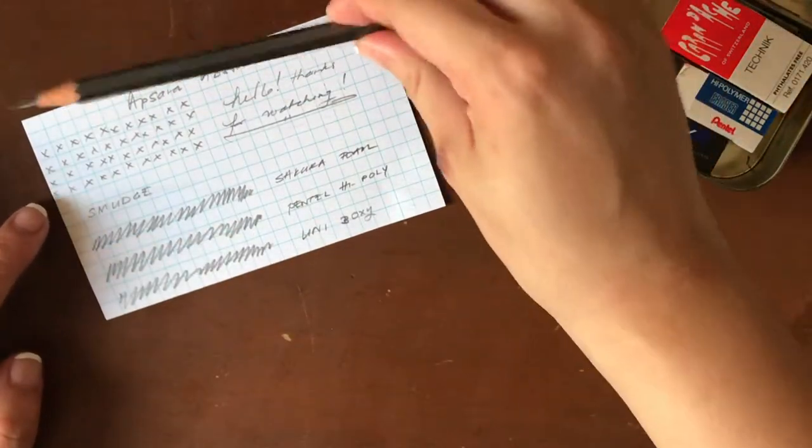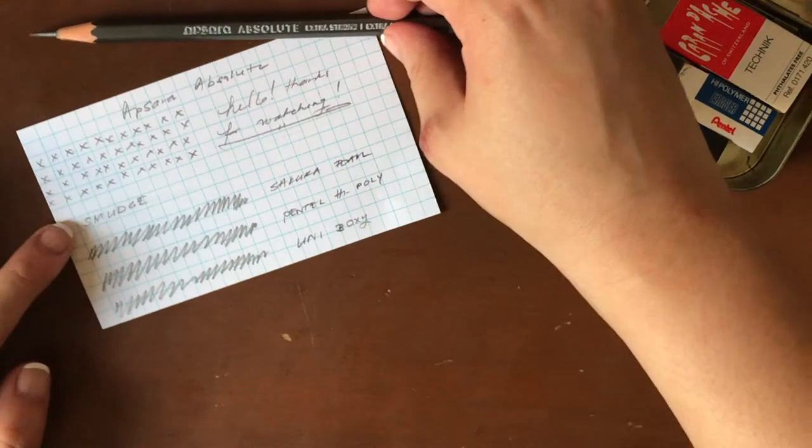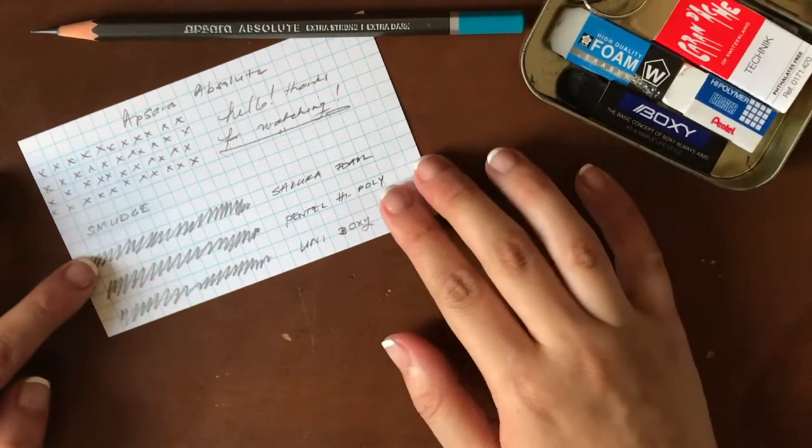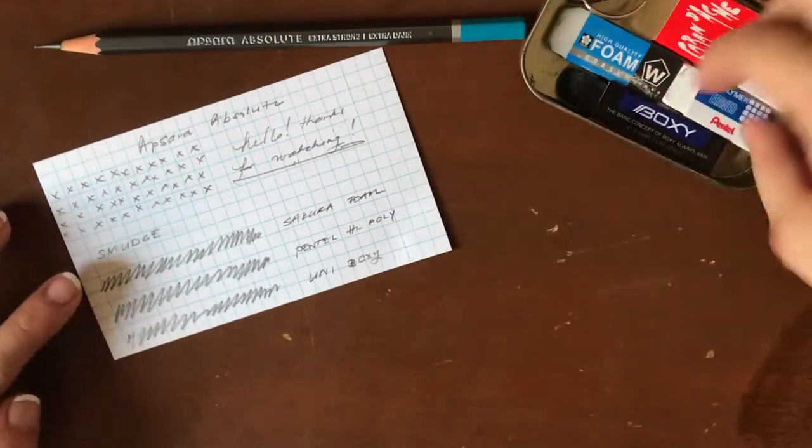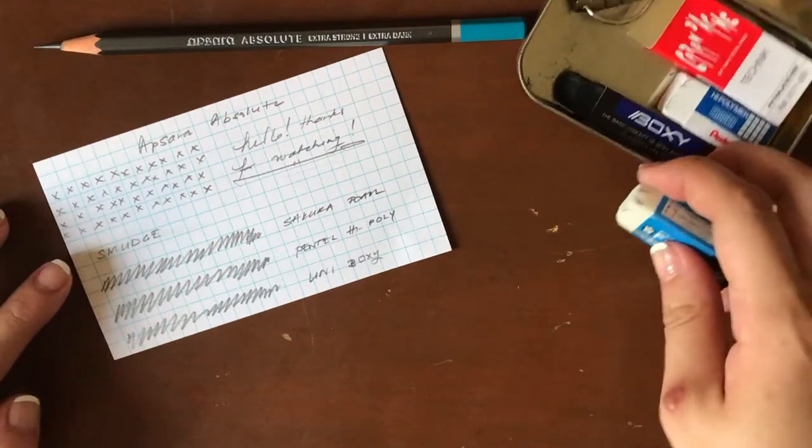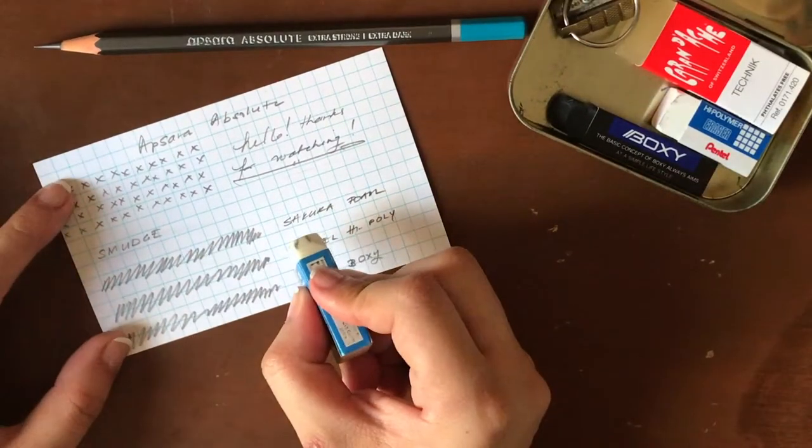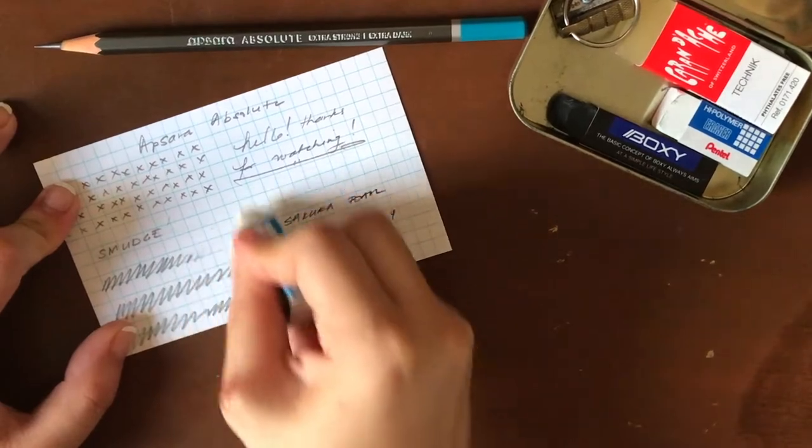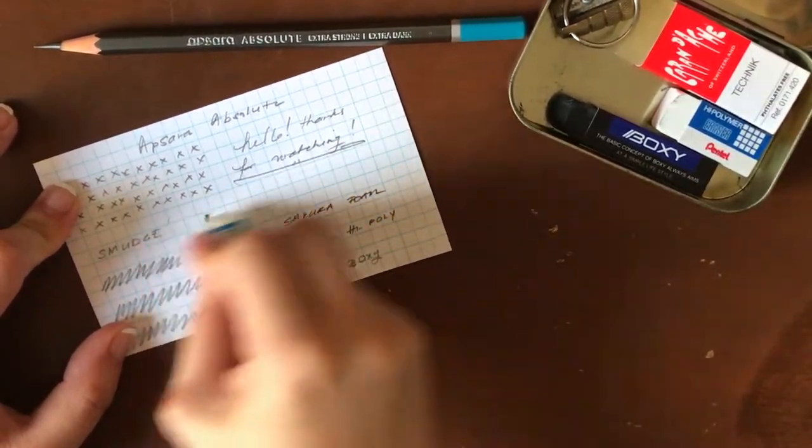The point is still as sharp as ever. Unreal. Anyway, let's put this bad boy down so we can still see it. And then I'm going to take my erasers one by one from my little Klimt tin. I'm going to erase half for you so you can see the difference.